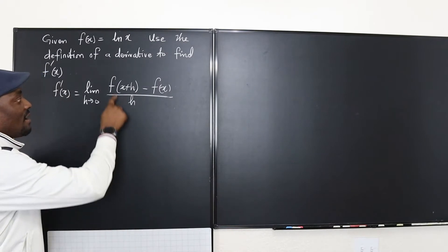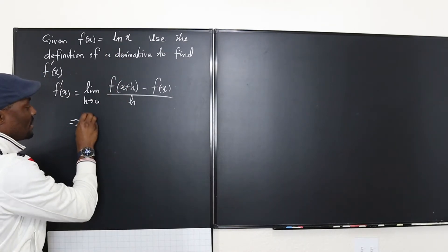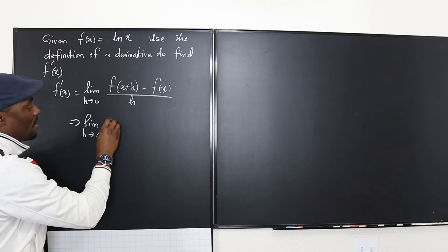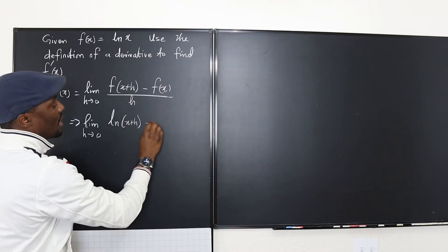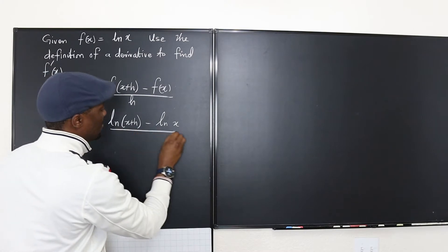In this case our function is natural log and we just start. So this is going to be the limit as h goes to zero of natural log of x plus h minus natural log of x divided by h.